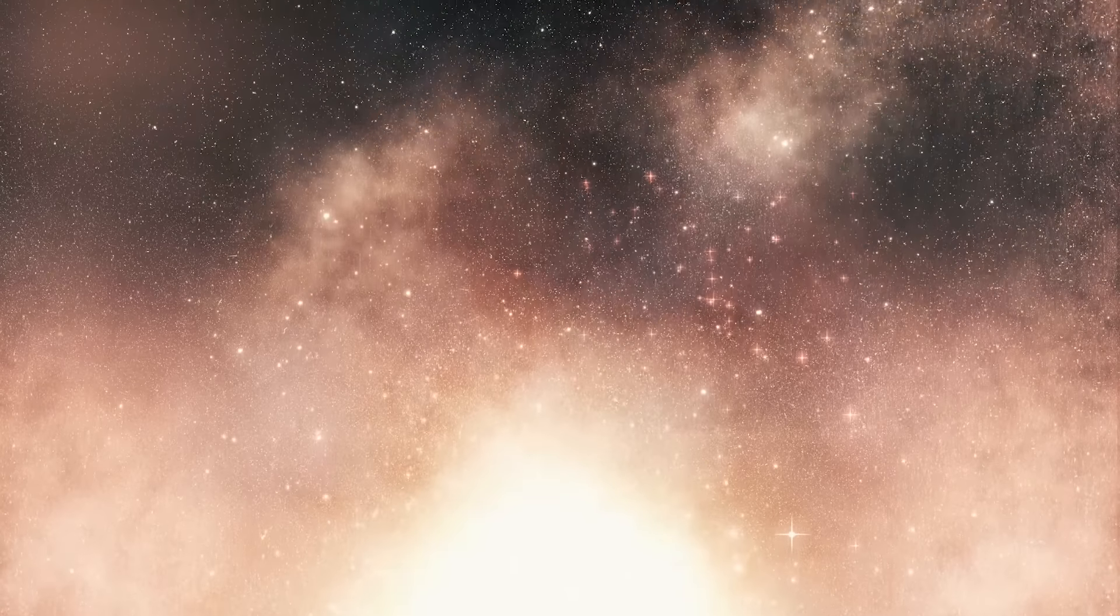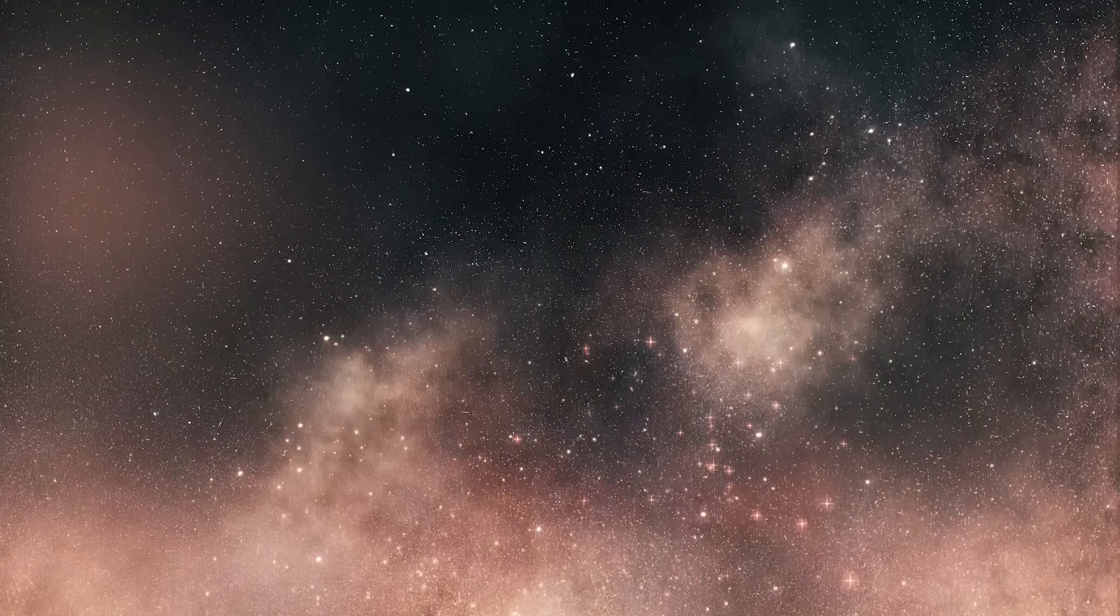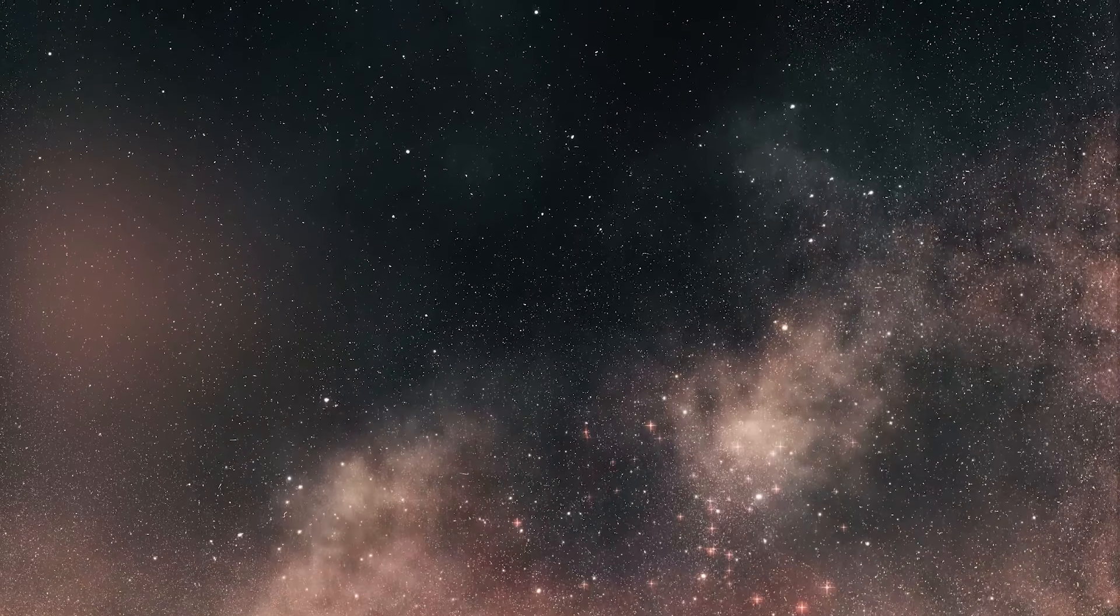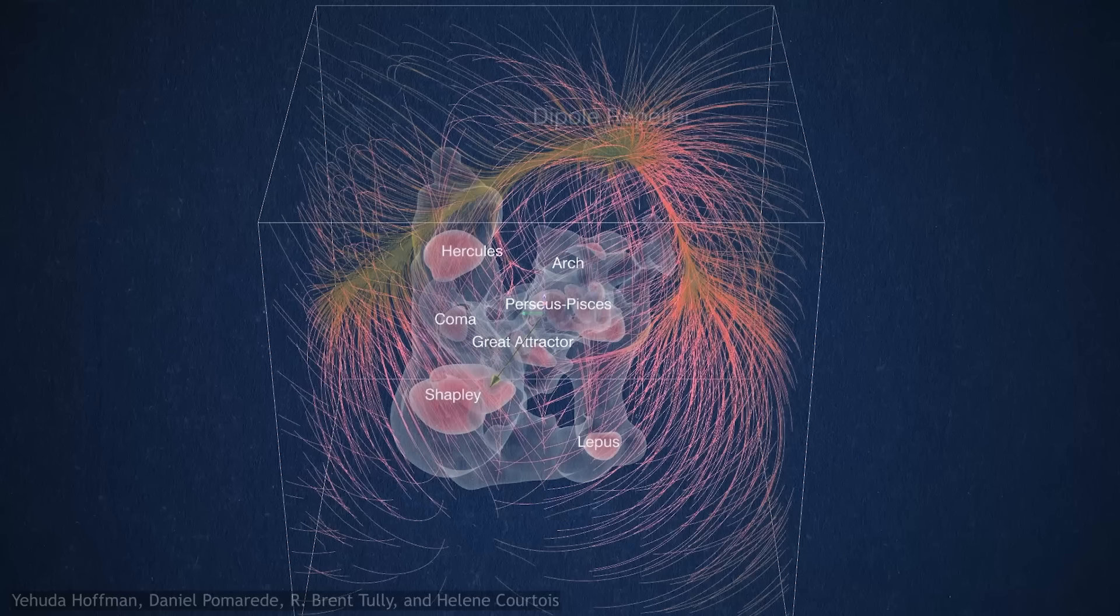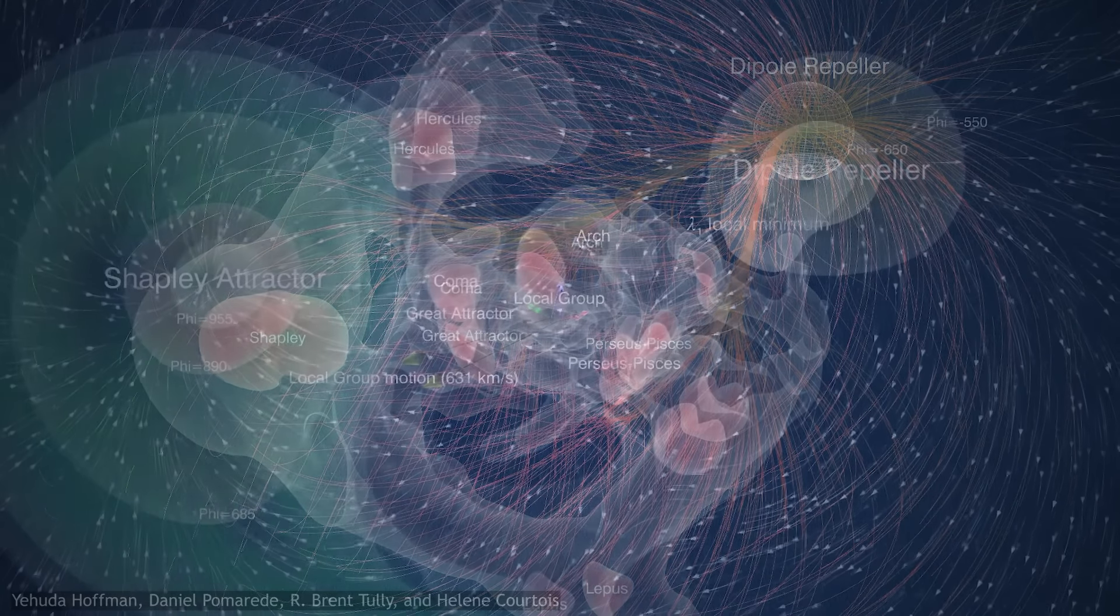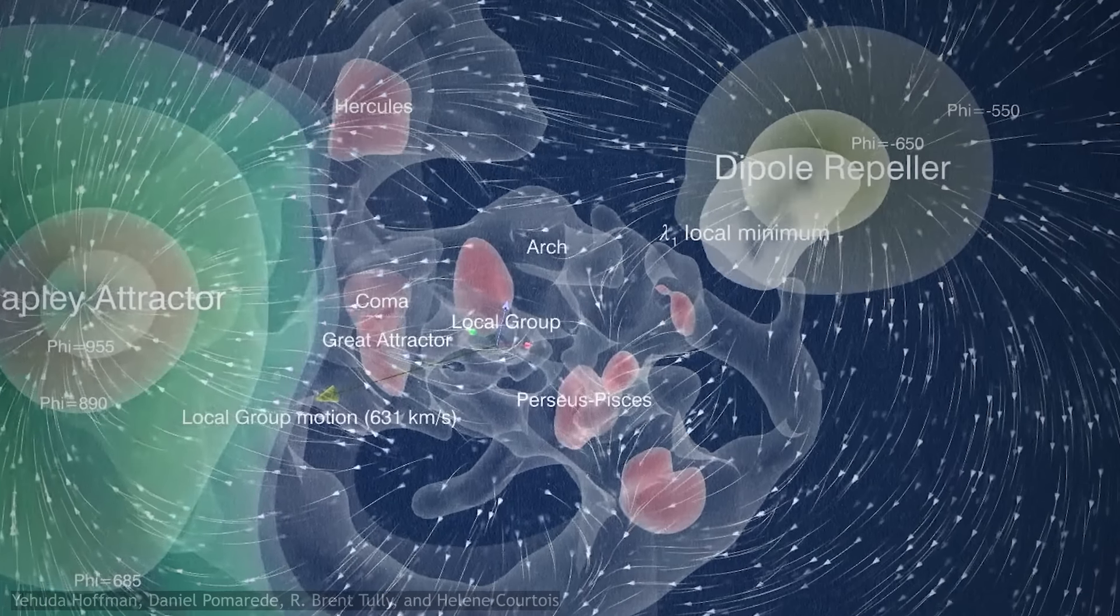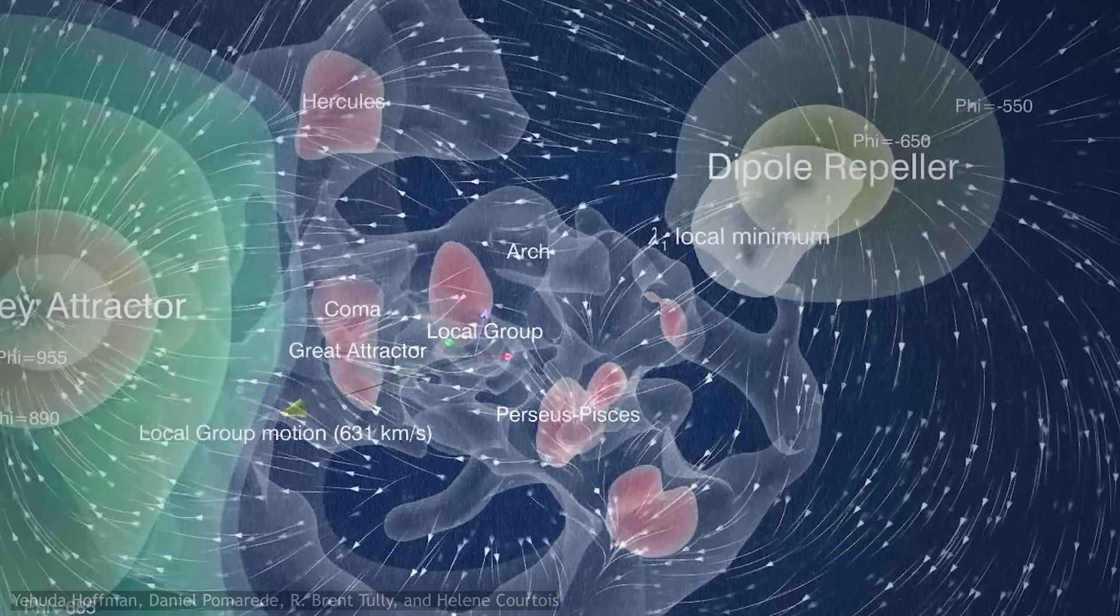A great void. A vast expanse of nothingness. One of many that dominate the volume of the universe. Named the Dipole Repeller Void, we do not yet have an accurate understanding of its shape, size or dimensions. All we know is that it seems to participate in the great movements that define life in the large scale universe.